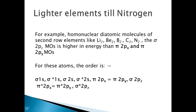For lighter elements up to nitrogen — homonuclear diatomic molecules like Li2, B2, C2, and N2 — the energy of σ2pz and π2px and π2py are almost the same, with very little energy difference. Here, the π2px and π2py degenerate orbitals are higher in energy compared to σ2pz. The order is: σ1s, σ*1s, σ2s, σ*2s, then π2px = π2py, then σ2pz, then π*2px = π*2py, and finally σ*2pz.